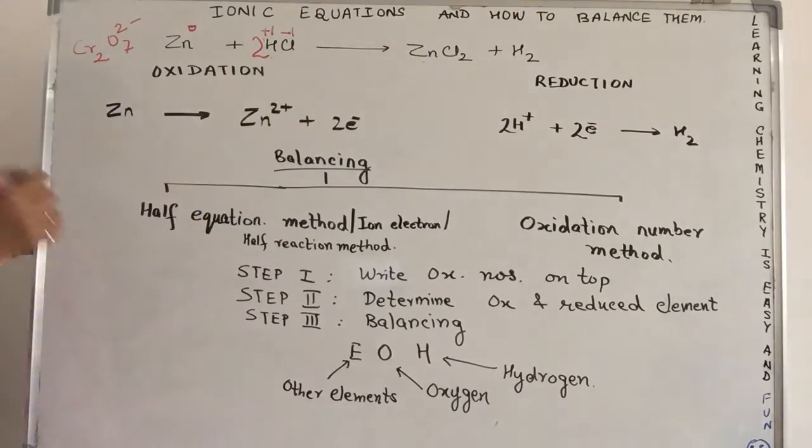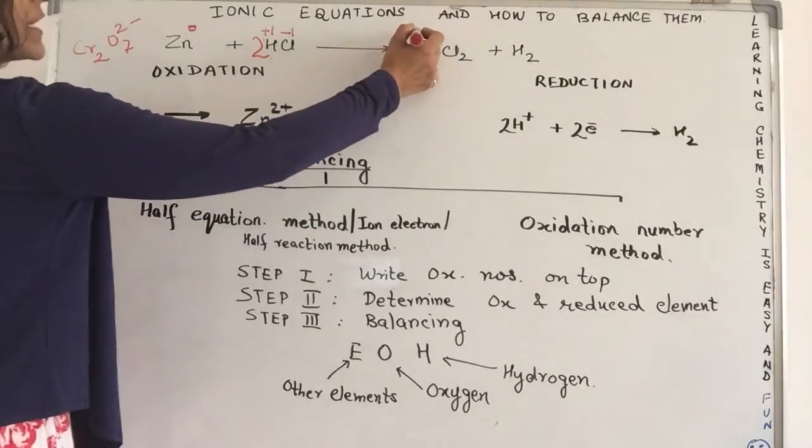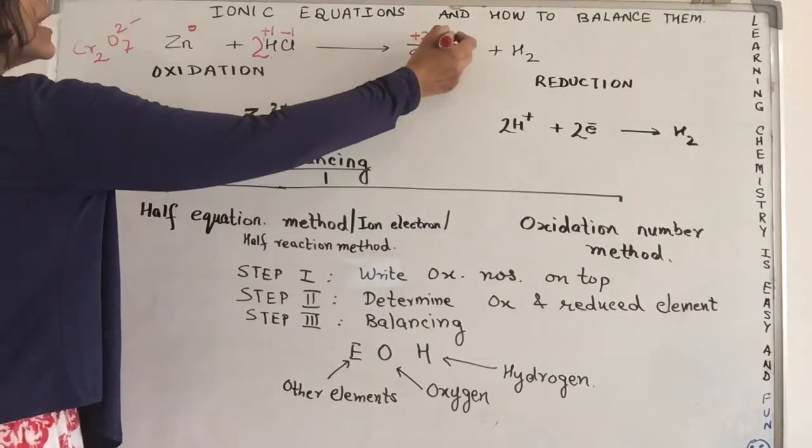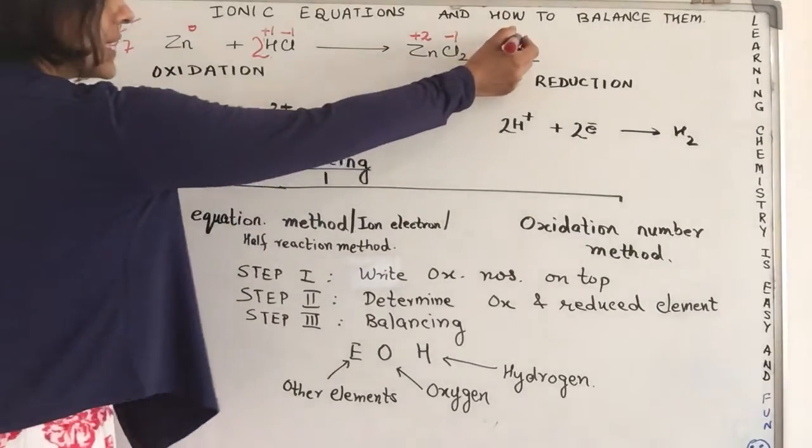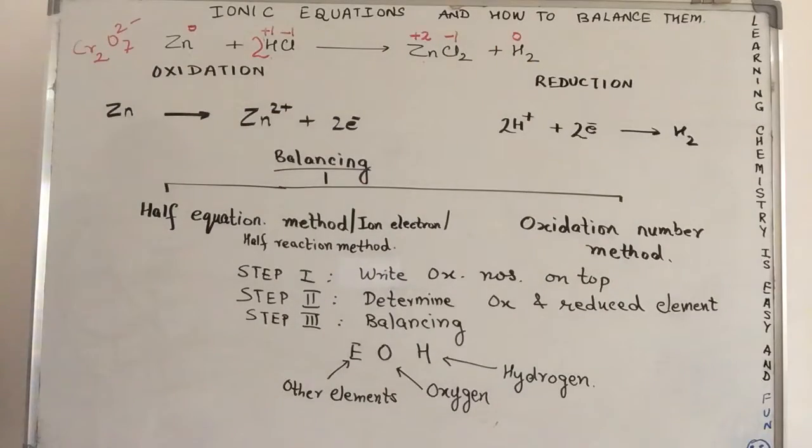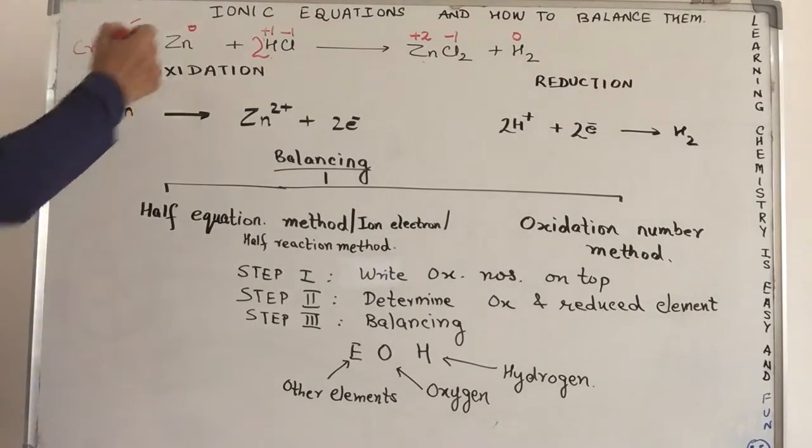chloride oxidation state minus 1, zinc chloride. Now, your zinc is in a combined state, oxidation state plus 2, chloride minus 1, hydrogen again uncombined state, oxidation state is 0. So,